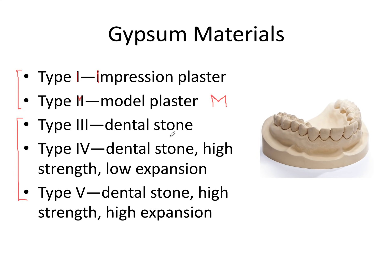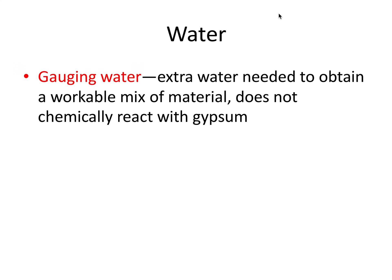Before going through each type individually, I want to talk about the significance of water, because all gypsum materials come in powder form and we have to mix in water to activate them and get them to set. I want to define gauging water — this is extra water needed to obtain a workable mix and does not chemically react with gypsum. The calcium sulfate hemihydrate chemically reacts with a set amount of water, but we also need additional gauging water to make the product workable enough to mix with a spatula in a mixing bowl.